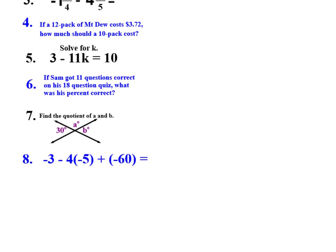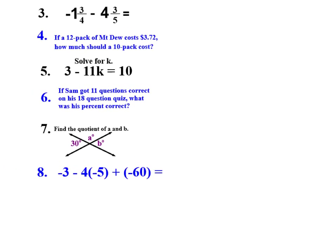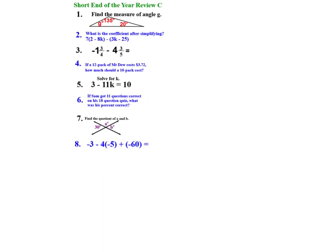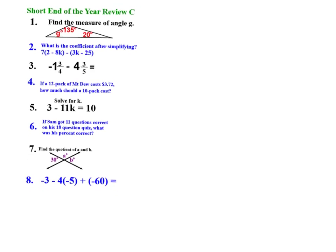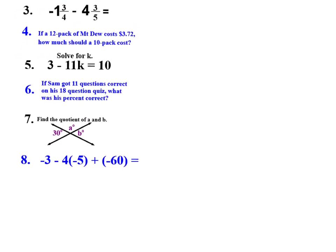Number 4 says, if a 12-pack of Mountain Dew costs $3.72, how much should a 10-pack cost? And you've seen me do a lot of changing of things proportionally by grabbing them and either pinching them on a screen like this or taking them and dragging diagonally by the corner. It's another way to grow or shrink something proportionally. But you keep the same constant ratio, which that's the proportional part of that. So I'm going to go ahead and set up a proportion.